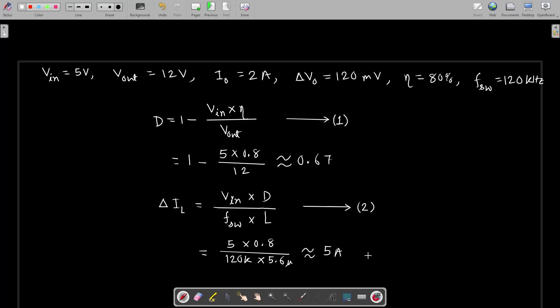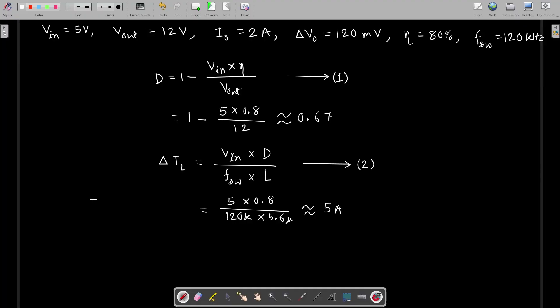Now based on that duty cycle, the inductor ripple current delta iL is found out to be approximately 5 ampere. Here we designer takes either of two approaches. First, we have already selected the inductor value as in this case, then we calculate the ripple current using equation number two.